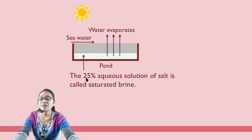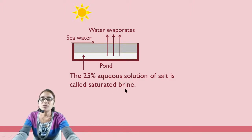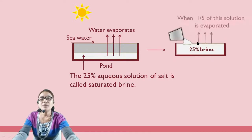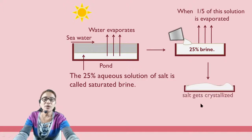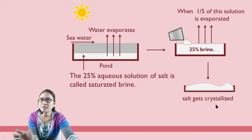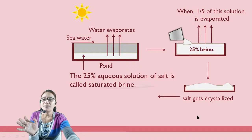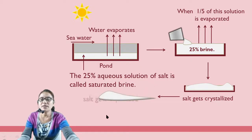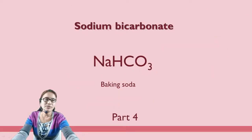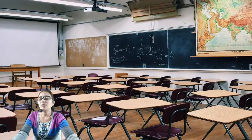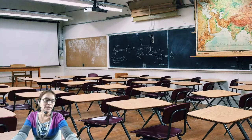A 25% aqueous solution — saturated brine — is collected and then water is evaporated. After evaporation, the salt gets crystallized and we obtain table salt in this way. In the next video, we will discuss sodium bicarbonate, also called baking soda.